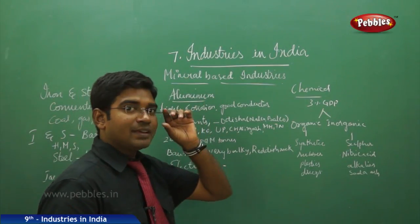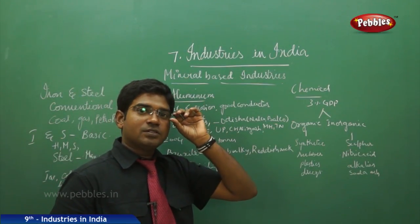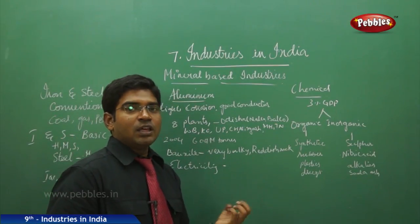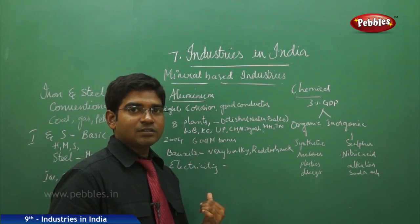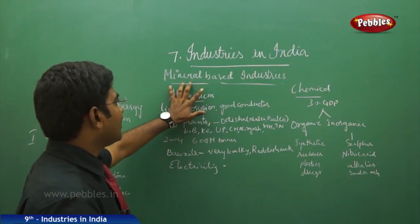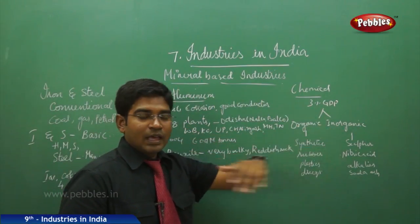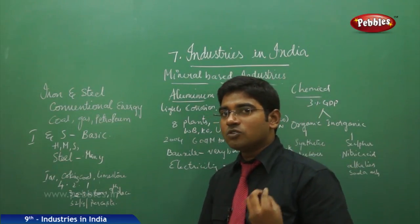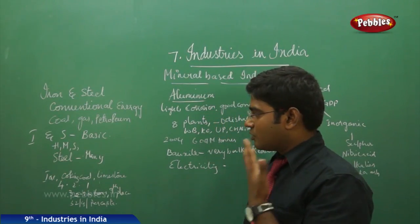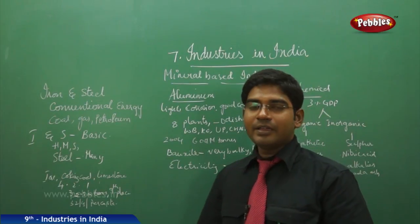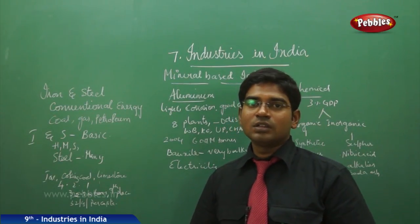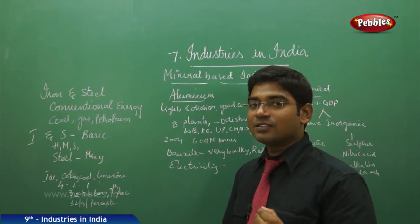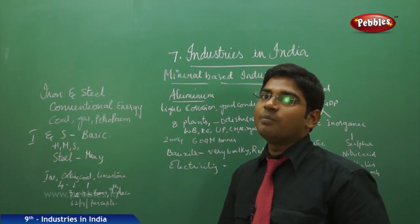As we have discussed, the next category of industries: we have discussed about agro-based industries. Now, if minerals are the raw materials, then we call them mineral-based industries. Iron and steel are the basic industries because most industries — small, medium, or large — all require the investment of iron and steel. That is the reason why iron and steel industry is known as a basic industry.